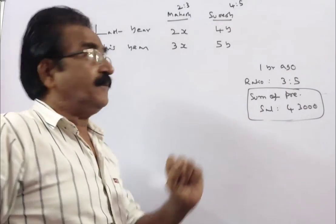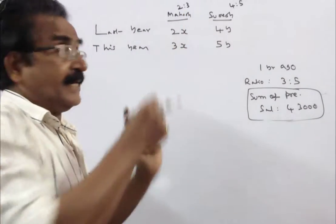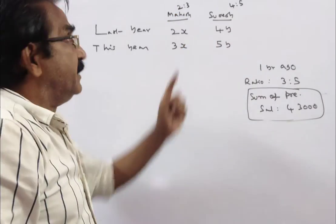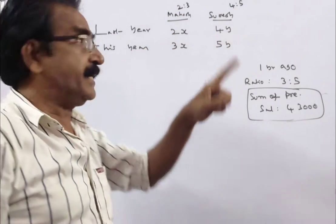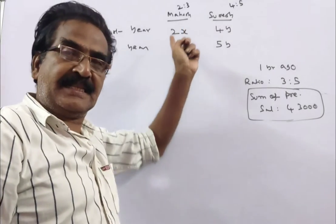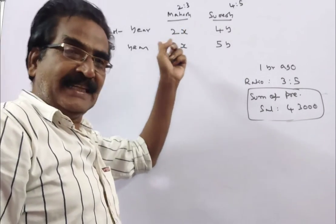And the ratio of Mahesh's salary last year to this year is 2 is to 3. That means last year Mahesh's salary was 2x, this year Mahesh's salary is 3x.